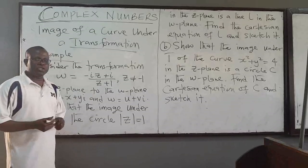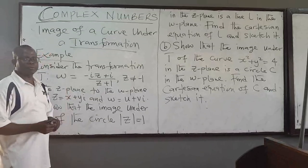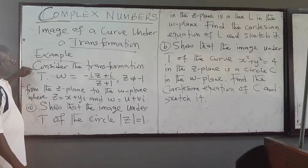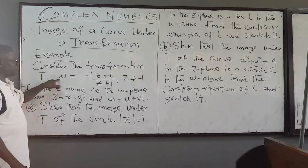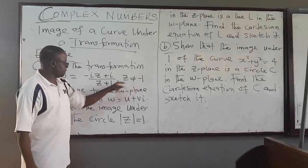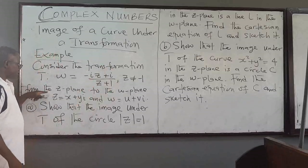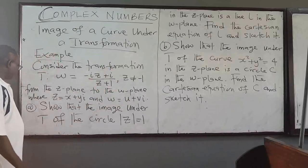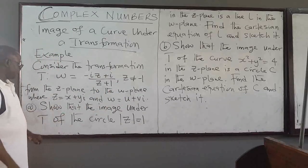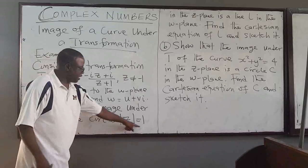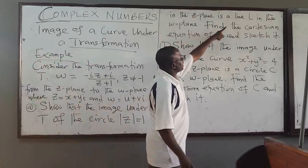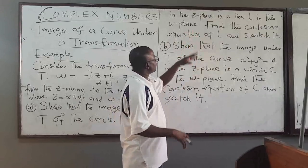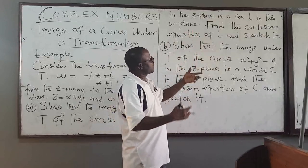We want to continue with the image of a curve and a transformation. This is the second example. We consider transformation T where W is given, from the Z plane to the W plane. The first question: show that the image under T of the circle in the Z plane is a line L in the W plane. In other words, if I transform it in the W plane, I'm going to get a line — let's call that line L.